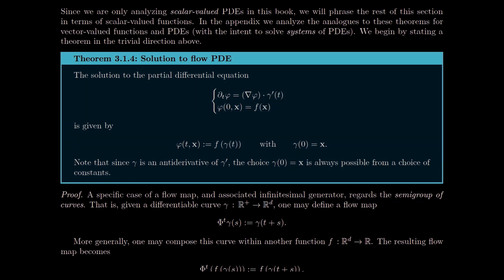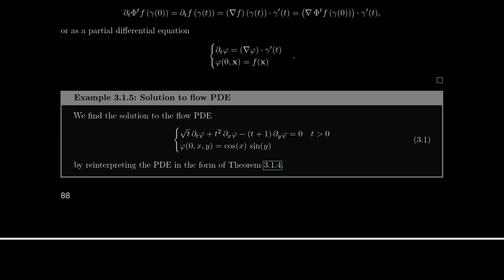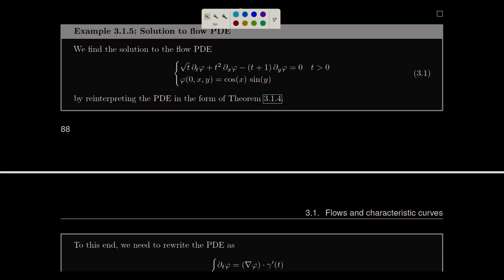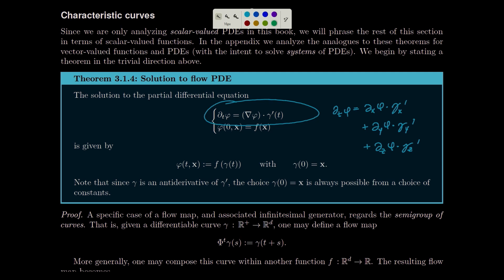Gamma t is the flow — you can think of the flow acting on curves, shifting the curve itself. Now let's look at an example. If the PDE doesn't immediately look like the form above, we translate it: the partial derivative in time of phi equals partial_x phi times gamma_x' plus partial_y phi times gamma_y' plus partial_z phi times gamma_z', and so on. So we always look for a partial derivative in each spatial variable times a function of time.